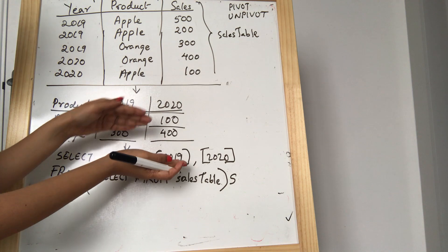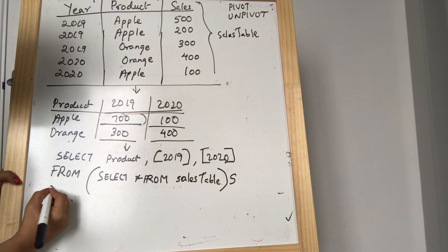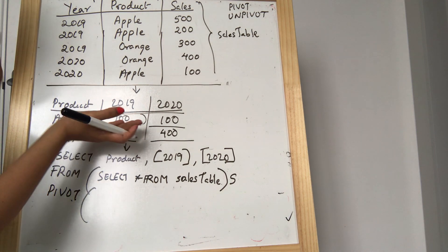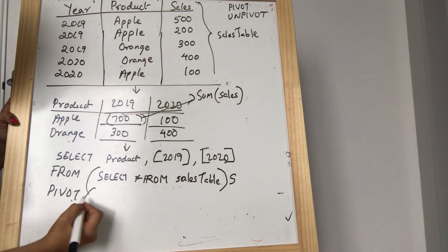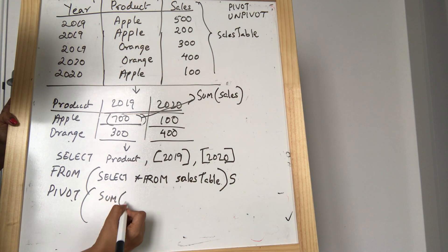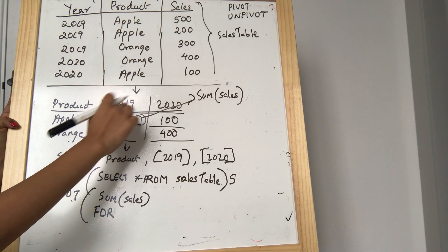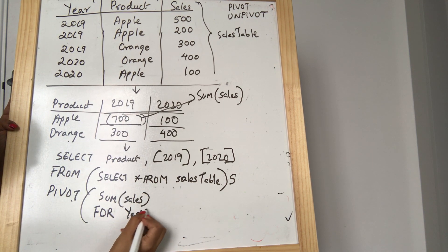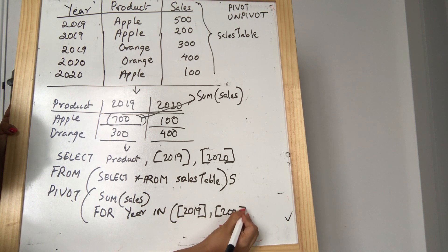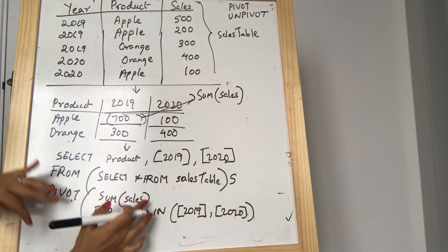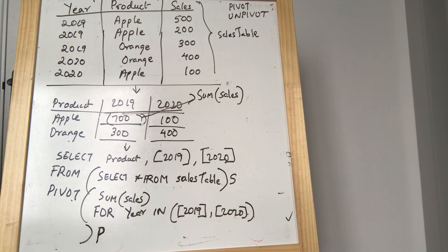We want product for years 2019 and 2020 from our source table, but we want to pivot it. So we write PIVOT. What are we pivoting? We want to find the sum of sales. For what? We want to find the sum of sales for year IN (2019, 2020). So we want to find the sum of sales for years in 2019 and 2020. Let me give this pivot table an alias P.